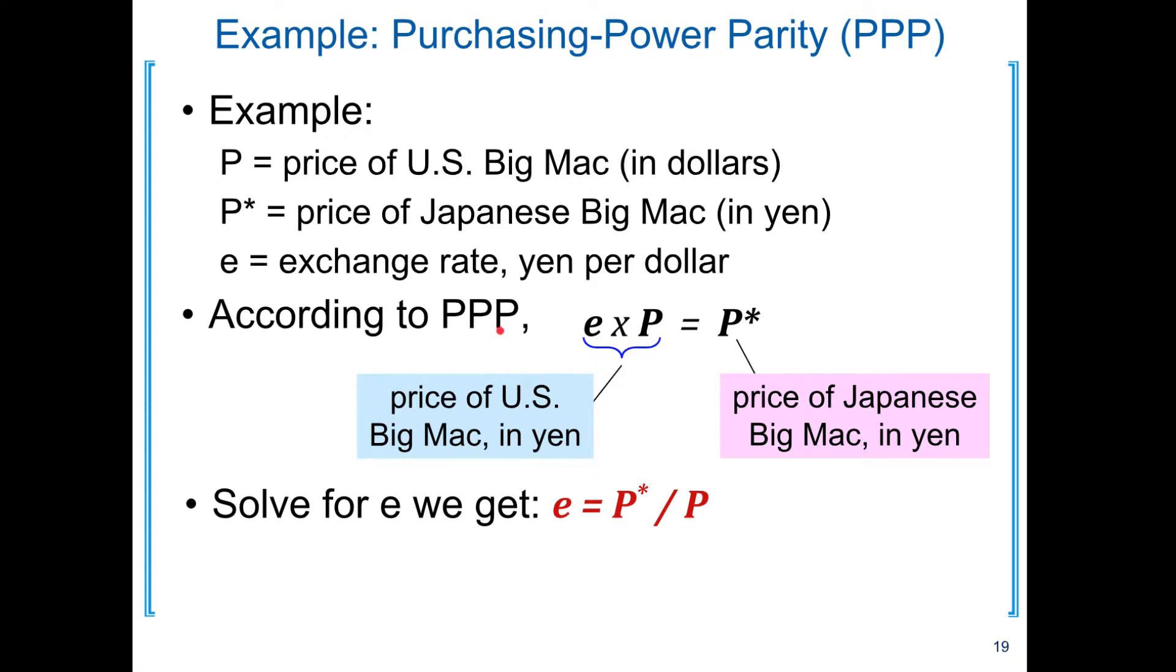Then according to law of one price, this same good Big Mac should sell for the same price in US and Japan. In Japan, the price of Big Mac is P star in Japanese Yen. In US, the price of Big Mac is P in terms of Dollar.